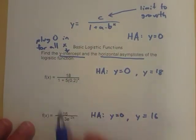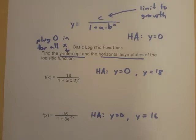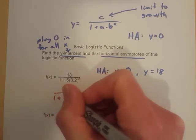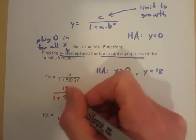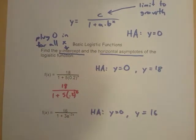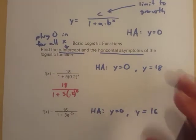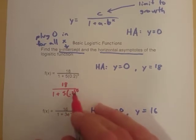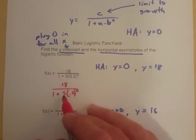So in this case, if we were to plug in 0 for x, that would be 18 over 1 plus 5 times 0.2 to the 0. Now here's the thing about anything raised to the 0 power, it's always equal to 1. So 0.2 to the 0 power is 1.